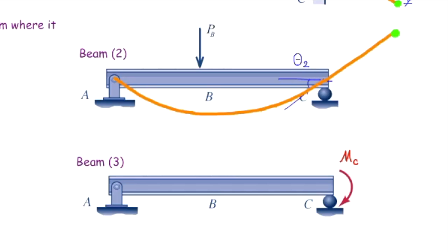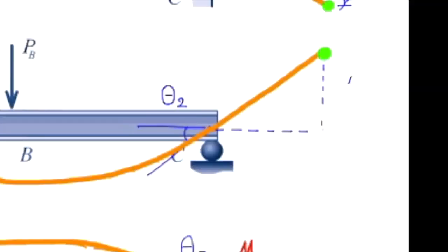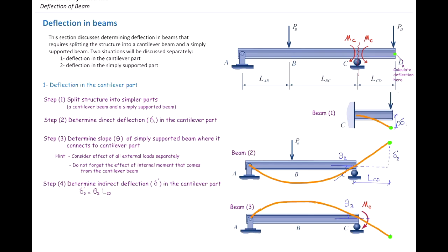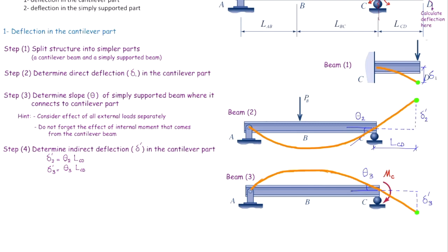We need to determine that slope for every sub-structure — here we have beam number two and beam number three — so we determine theta two and theta three. Consider the effects of all external loads separately, and do not forget the internal moment from the cantilever beam. In step four, determine the indirect deflection in the cantilever part: delta prime equals theta times L_CD for each beam, and then add all deflections together for the total deflection.